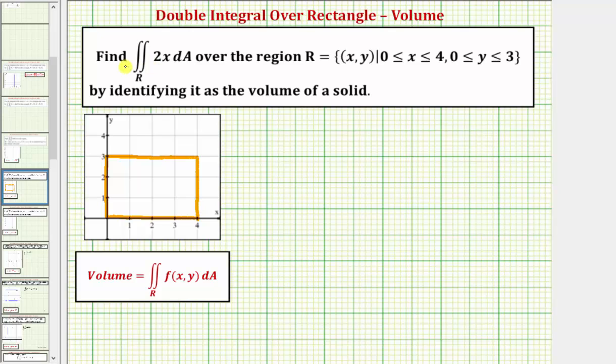Next, notice how the integrand function f of x comma y equals two x is non-negative over this entire region, which is the reason why this double integral is the volume of a solid. If the function was negative over this region, we could not interpret this as volume.